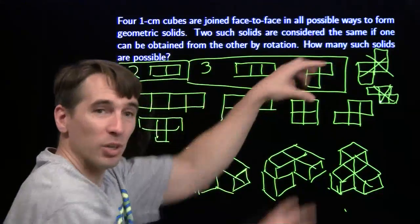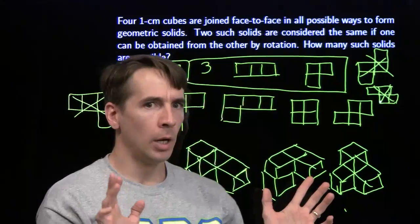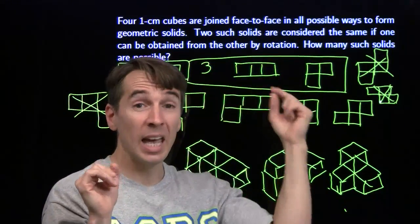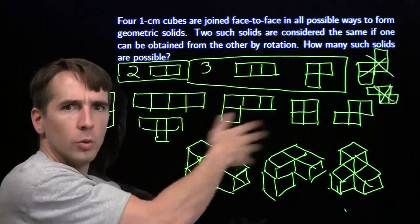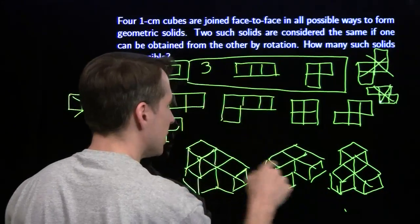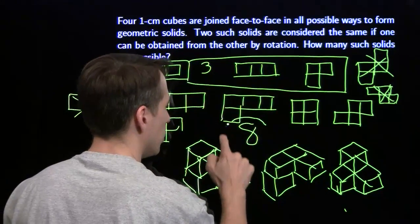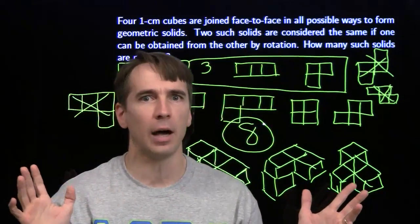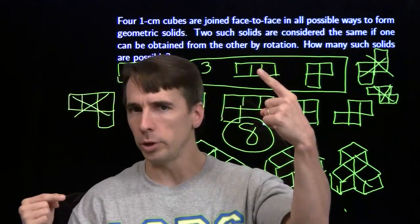We've taken care of every possible way to add a cube to any of the three-cube configurations. We've ensured no two pieces are the same. Counting them all up: 1, 2, 3, 4, 5, 6, 7, 8 possible solids. The key: when you're going through casework, count everything once and only once.